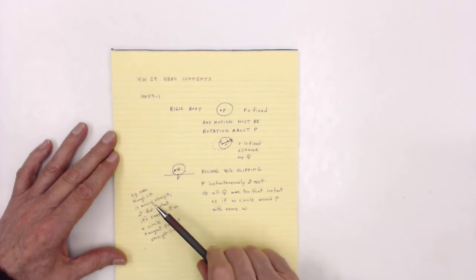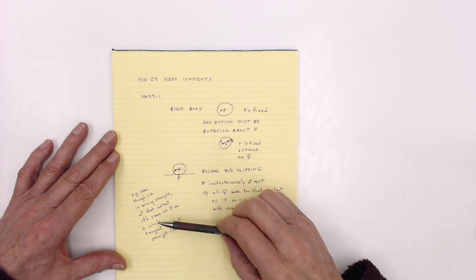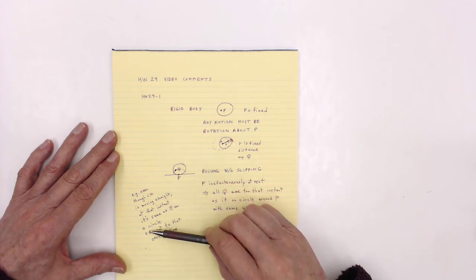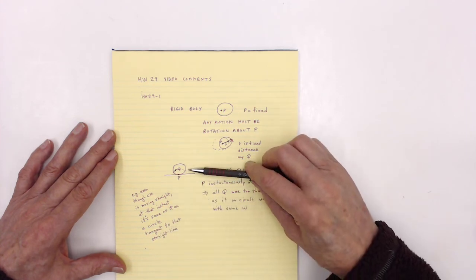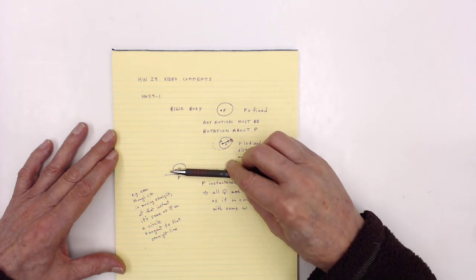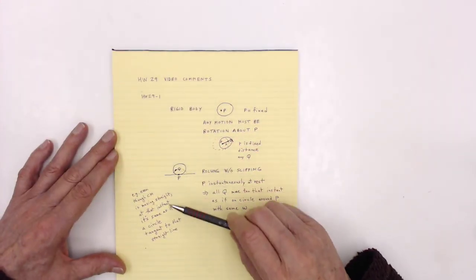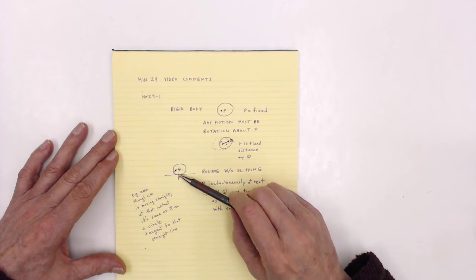So, even though the center of mass is moving straight, at that instant, it's as if it were on a circle tangent to that straight line. That was the thing that the student brought up. How can a circle be a straight line? But instantaneously, it's tangent to that. And so, even the center, it looks like instantaneously, it can be interpreted as a rotation around the circle, a circle around P.